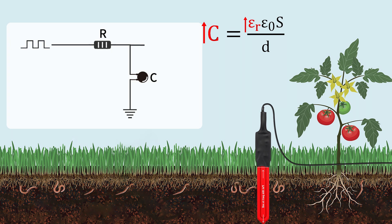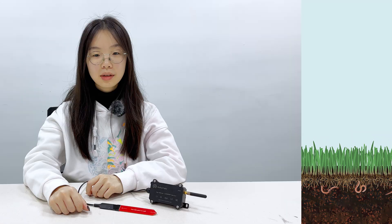We convert the measured capacitance of the soil moisture sensor into a voltage output. When the soil moisture increases, this results in a decrease in the voltage values.